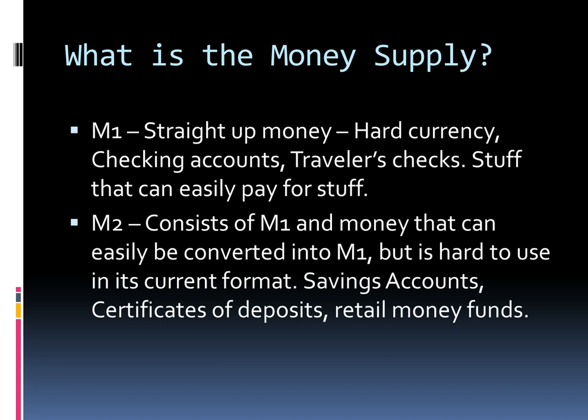The money supply of America is broken up into different components. M1 is what you would normally define as money — it's money that you can easily buy stuff with, like dollar bills, coins, checking accounts, and traveler's checks. Basically stuff that if you go to a shop and hand them some form of it, they'll accept it. M2 includes M1, but also includes money that's not really exchangeable in its current state but you can easily convert it into M1, like savings accounts, certificates of deposit, and retail money funds.